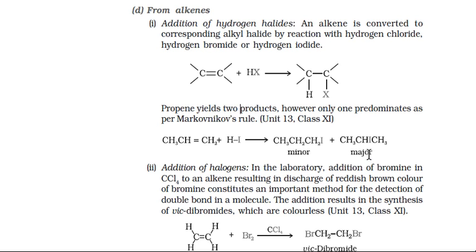If anti-Markovnikov addition takes place, then the iodine would go to the carbon with more hydrogen atoms, so we would get 1-iodopropane, which is a minor product or the anti-Markovnikov product. In the case of addition of hydrogen halide to an alkene, Markovnikov's addition rule is followed. However, in the case of HBr in the presence of peroxide, anti-Markovnikov addition will dominate over Markovnikov addition.